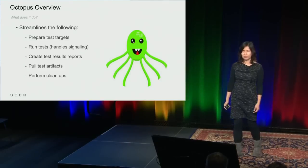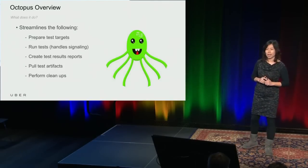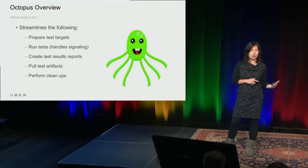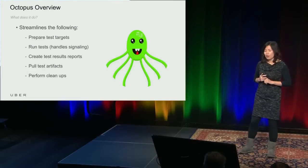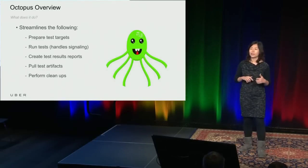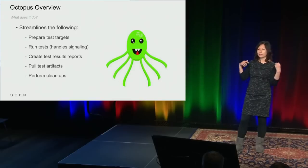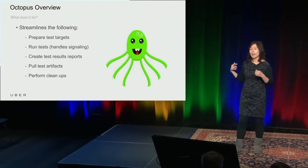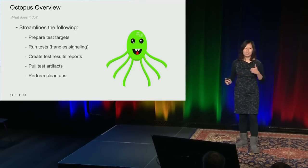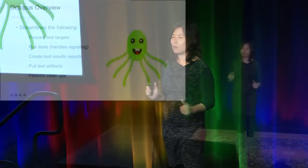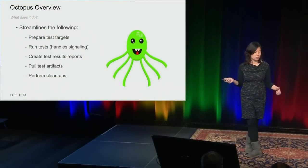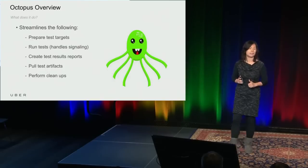What does Octopus do? Octopus streamlines the following functionalities via command line — whether it's run by an end user on a laptop or by our Jenkins CI, it runs the exact same command, making Jenkins integration easy. First, it prepares the test targets — either a device, an Android emulator, or iOS simulator — installs the apps, puts all the test configuration and data on the device, and launches the app. Then it runs the test and handles the underlying communication across different tests using signaling. At the end, it creates test reports, pulls test artifacts like bug reports and screenshots, and performs necessary cleanups.